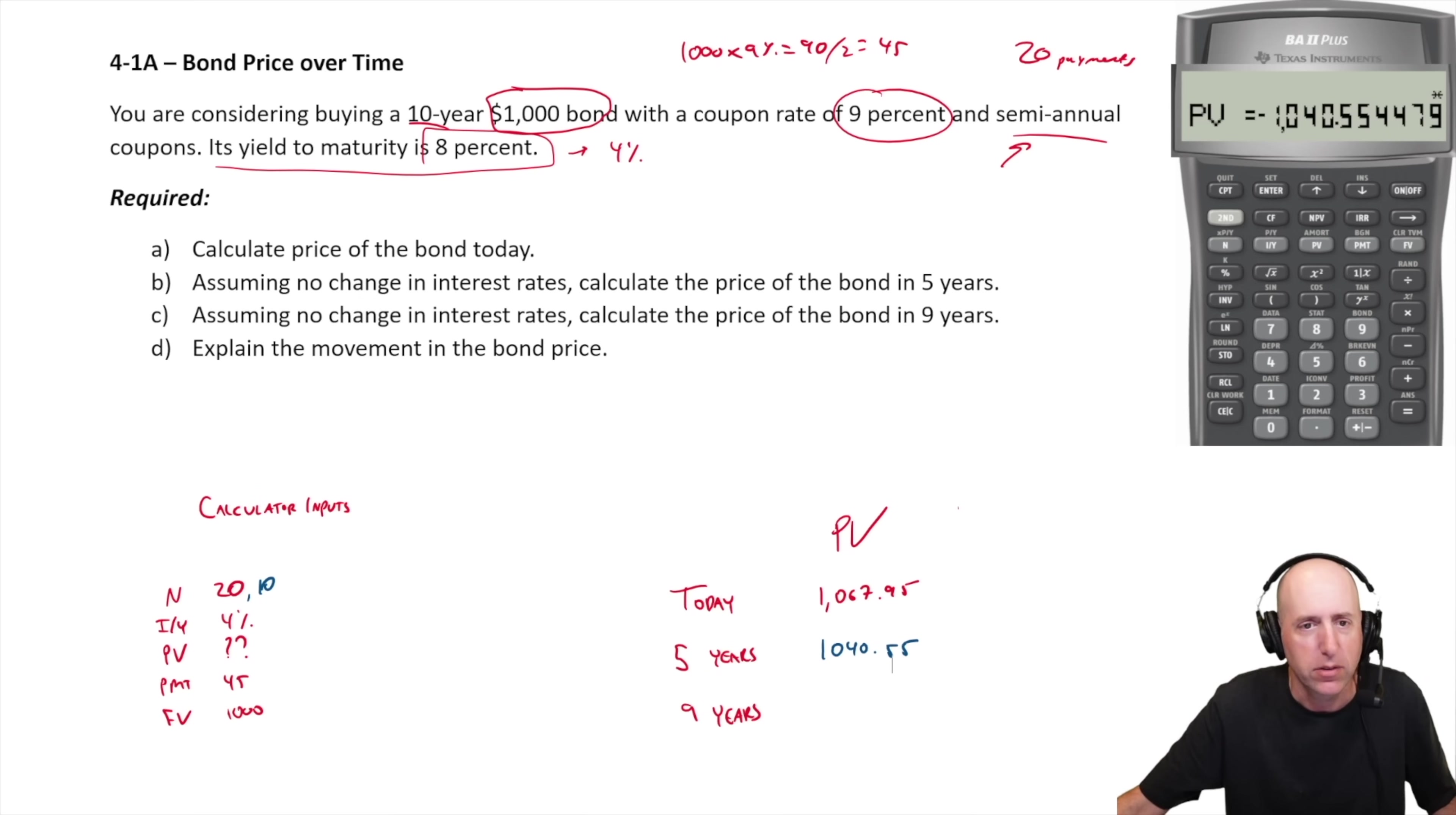What about the price of the bond in nine years? In nine years, how many periods are left on the bond? How many interest payments are left? And the answer is, well, I got one year left. So there's two payments a year, two payments. So N is two in that circumstance. So I put two in as my N and I compute PV. Then I get 1009.43. There we have it.